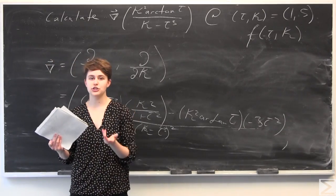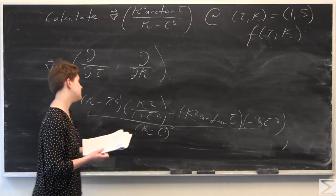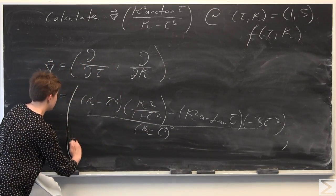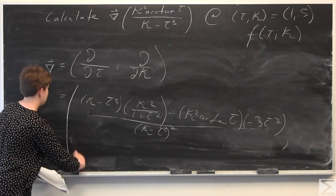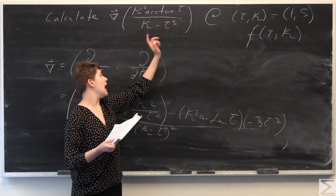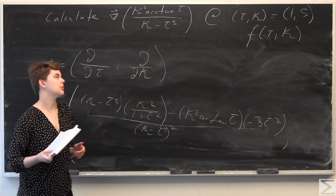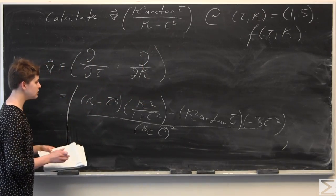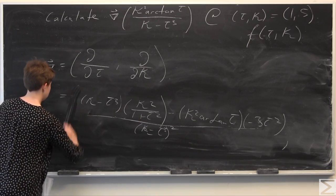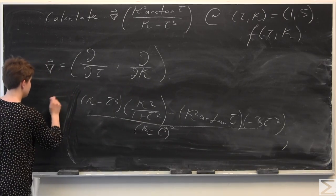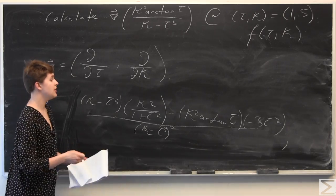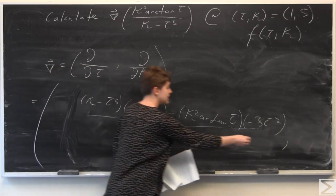Now we need to take the partial derivative of the function with respect to kappa to get the second component in our gradient vector. We'll do the same thing, because in the numerator we have something depending on kappa, and in the denominator we also have something depending on kappa, so we need to use the quotient rule again. This is the first component here.